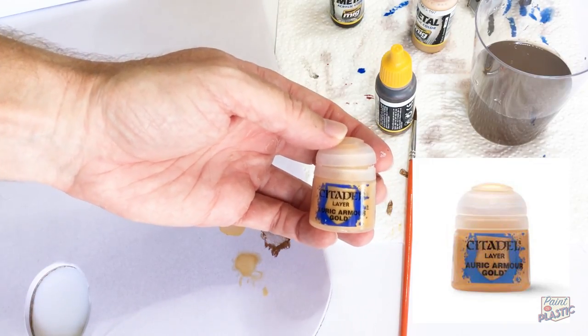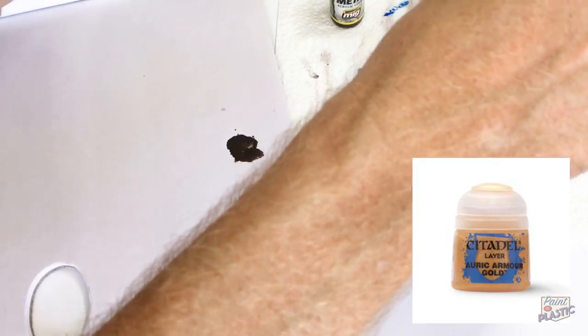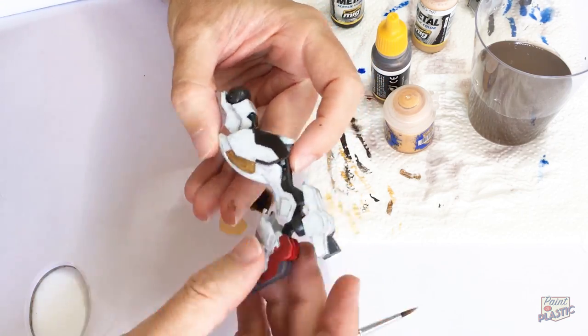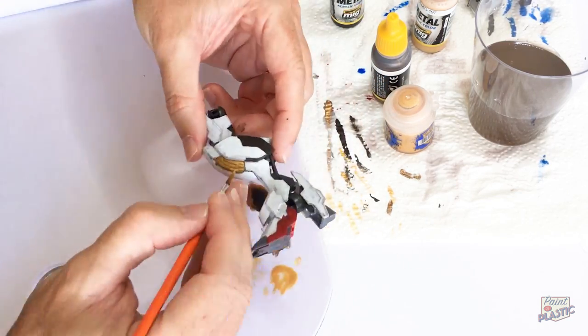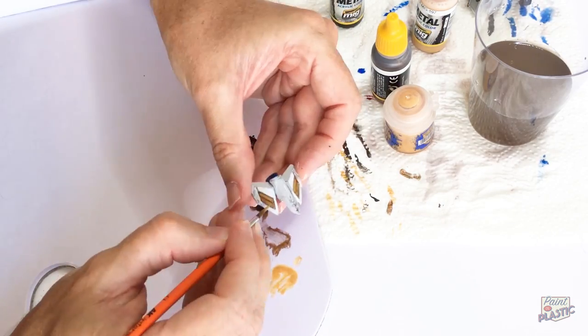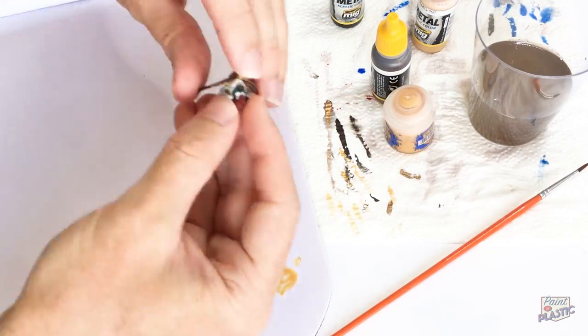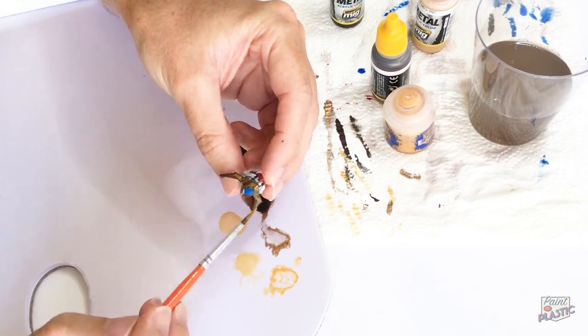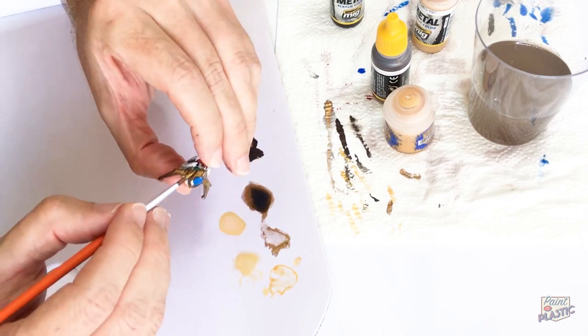I've been really looking forward to a chance to try these new Citadel metallics so here, Auric Armor Gold just to lay a highlight over the three foundation colors that I've laid down by Ammo. This is the first time to use the new pot design and I have to say I don't hate it. I gave it a shake and I spooned out a little bit of paint from the little lip that's up under the top of the lid there and it came out quite nicely, it's nice and thick and it's very gold which is what you want in a gold paint.